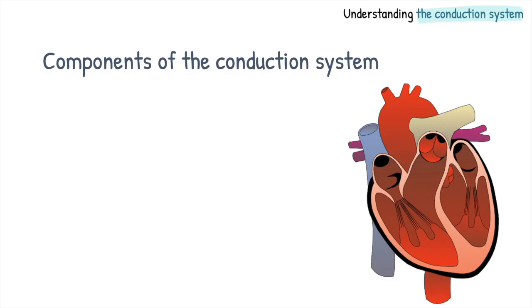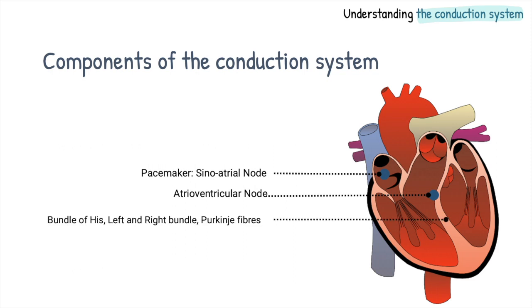So what are the components that make up the conduction system? The conduction system is made up of a pacemaker, also known as the sinoatrial node, which sits in the top right half of the heart. The atrioventricular node, which sits between the top and the bottom half of the heart, and the subsequent fibers, which relay electrical signals from the top to the bottom half of the heart.